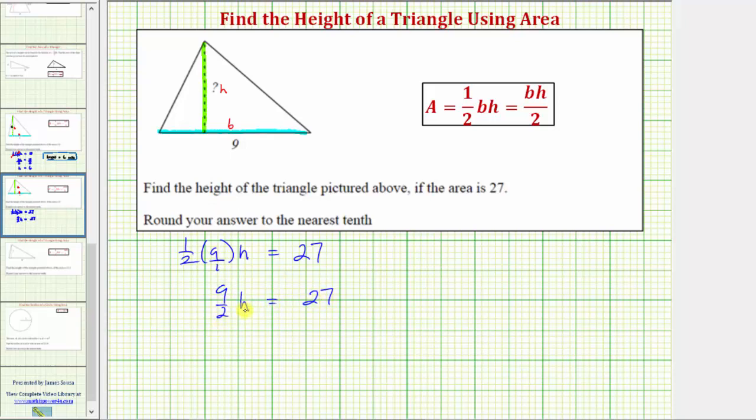Nine-halves H means nine-halves times H, and therefore we should divide both sides by nine-halves to undo this multiplication. And while that would be correct, instead of dividing by a fraction, we normally multiply by the reciprocal,